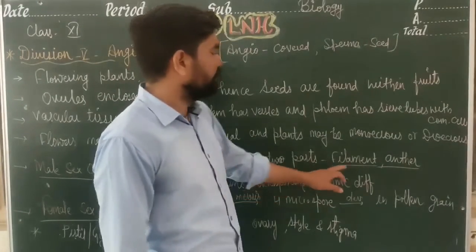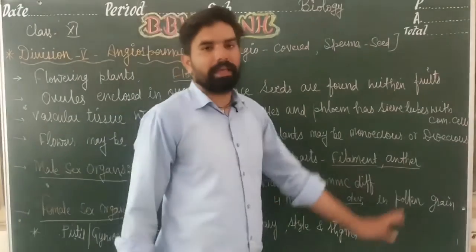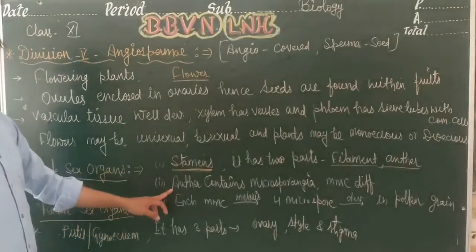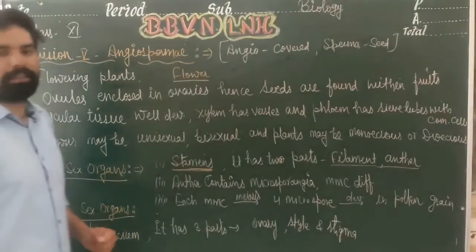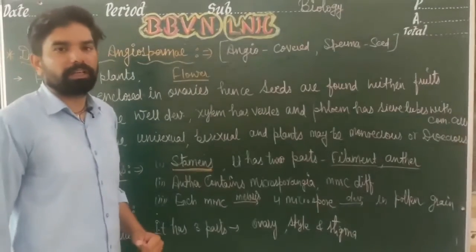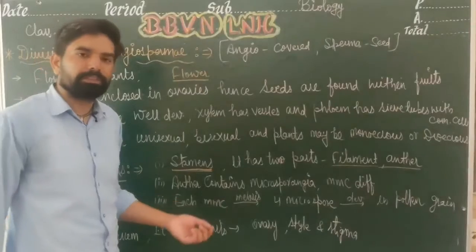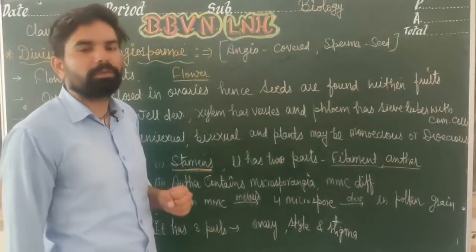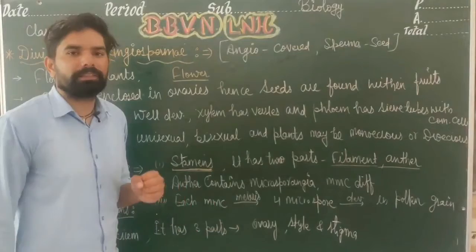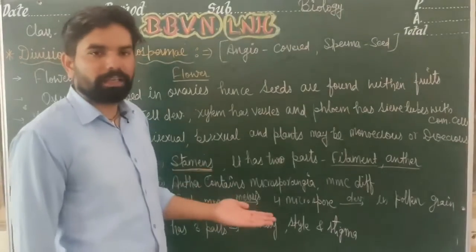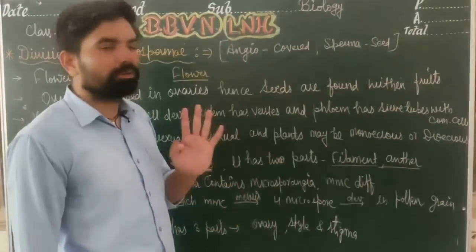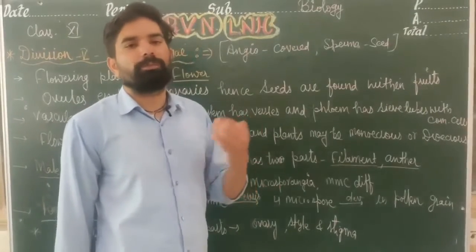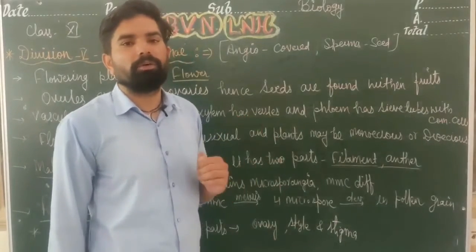The stamen has two parts: filament and anther. The anther contains microsporangia. Microsporangia produce 4 microspores, and those 4 microspores develop into pollen grains.